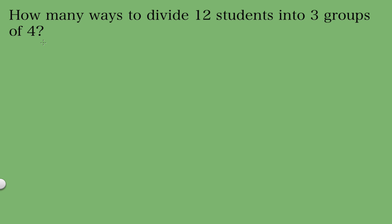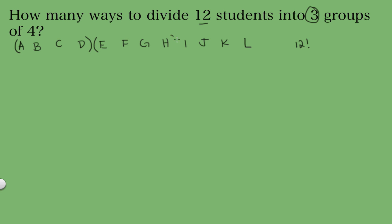Now that we've seen the easier example, let's go ahead and solve the original problem. We have 12 students and we want them divided into three groups of four. Our students are called A, B, C, D, all the way up to L. Obviously I can't write all 12 factorial permutations, so we know there are 12 factorial different ways to permute these students, and we want to divide them into groups of four like this.